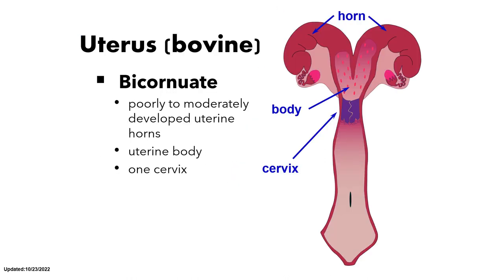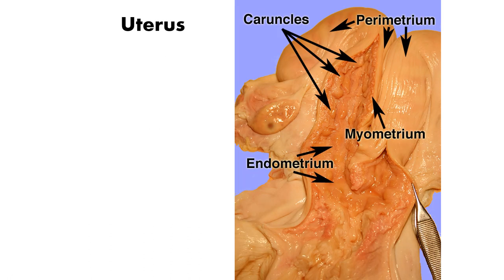In terms of uterine type, the cow has a bicornuate type of uterus. It has a poorly to moderately developed uterine horn, a uterine body, and one cervix. The uterine horn is poorly to moderately developed, with a well-developed uterine body. One of the structures found in the uterus is the caruncles, which serve as the fetal attachment site, forming the placenta.